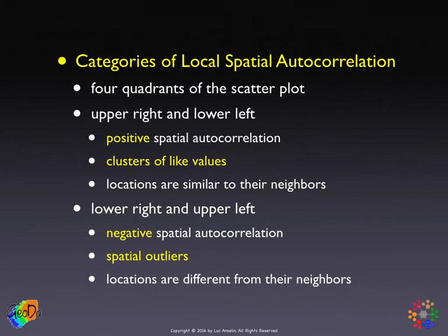Spatial outliers don't necessarily mean outliers in the traditional sense — they are outliers relative to their neighbors. For example, a neighborhood with a very high crime rate surrounded by low-crime neighborhoods would be a spatial outlier, as would an enclave of very low crime surrounded by high-crime neighborhoods.